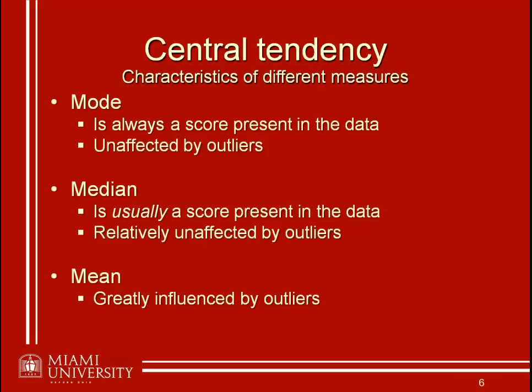The median is going to be relatively unaffected by outliers because you're looking at the center score. Unless you're adding so many outliers at one specific end of the distribution that it's really changing your count toward the middle, it's not really going to change the median too much. It may have an effect, but it's typically going to be a relatively small one.